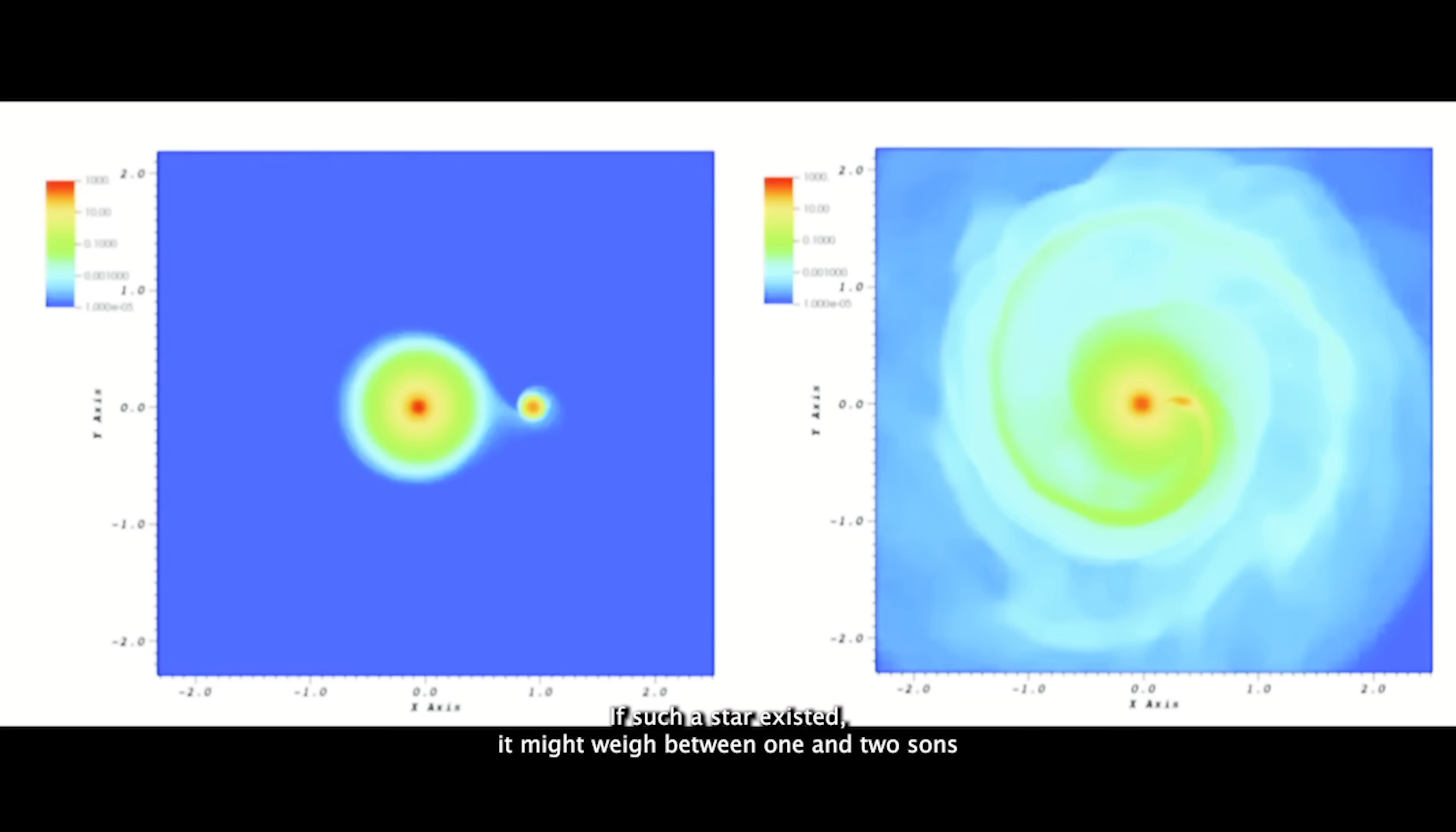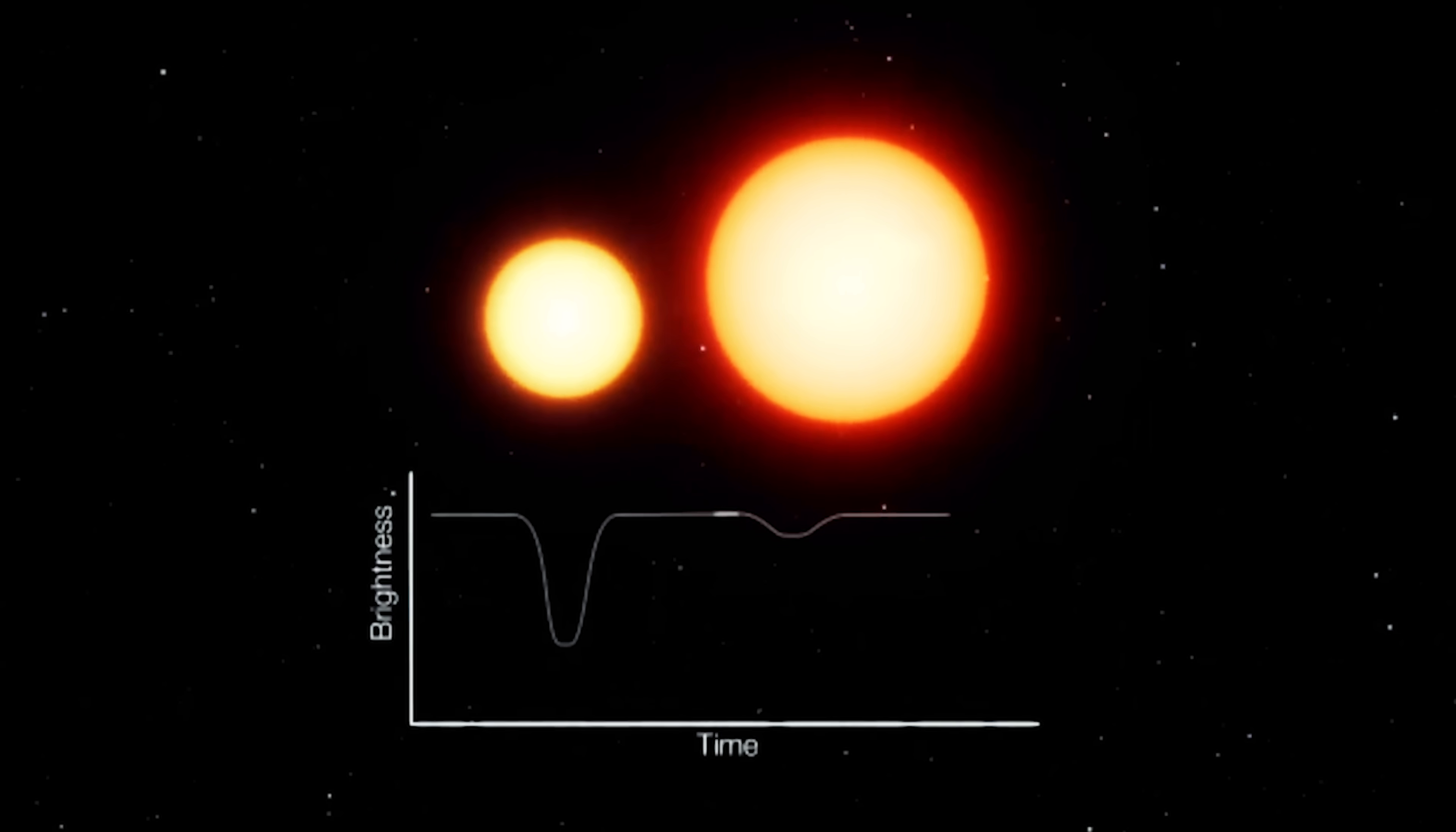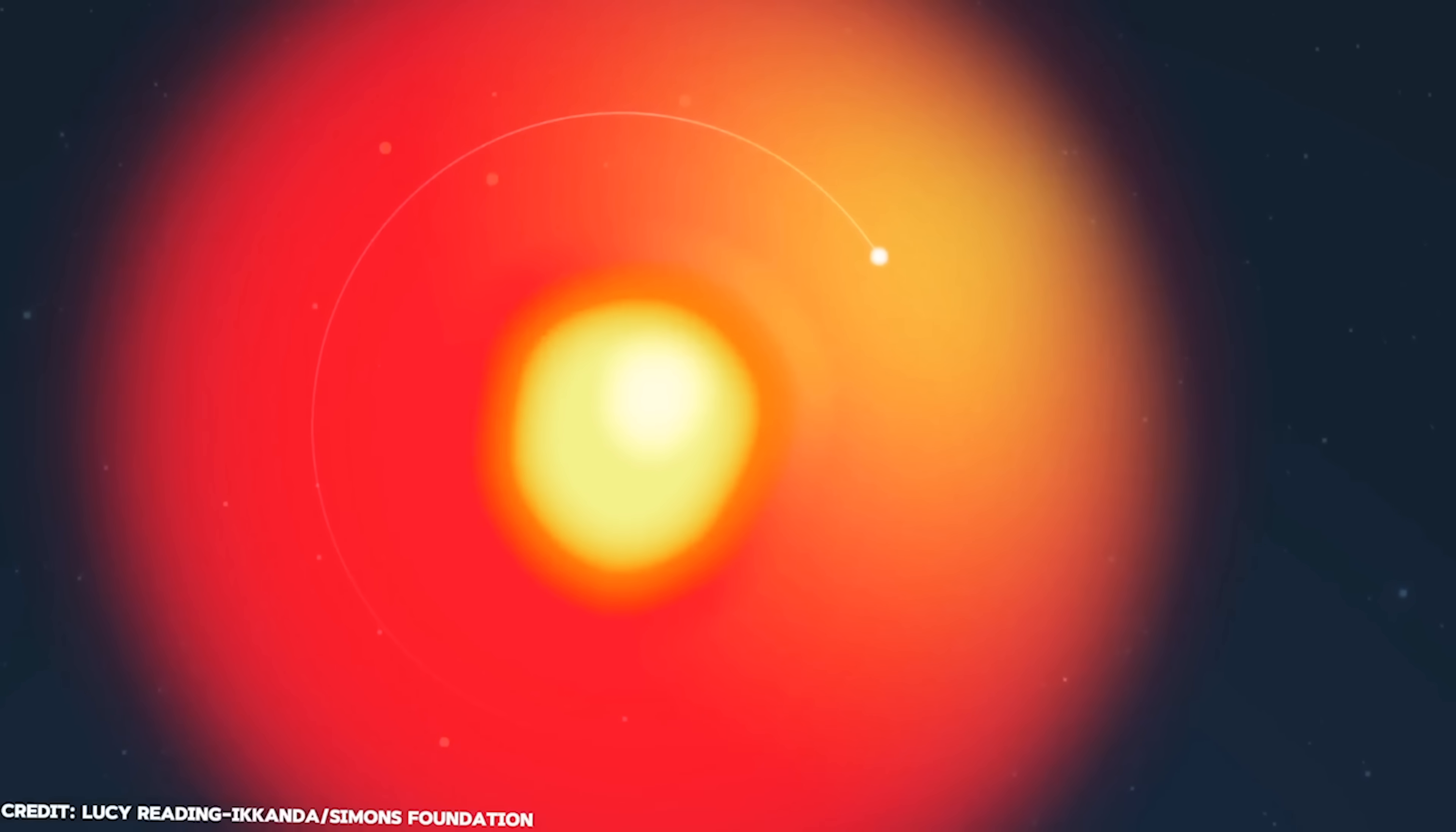If such a star existed, it might weigh between one and two suns, tucked in surprisingly close to the red giant. But finding it? That's another story. Betelgeuse is so monstrously bright, it blinds most instruments to anything nearby.